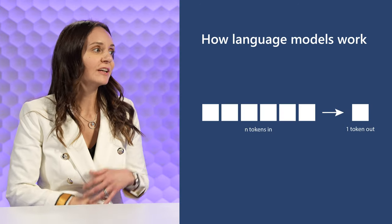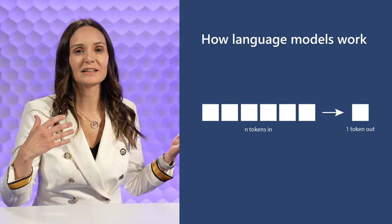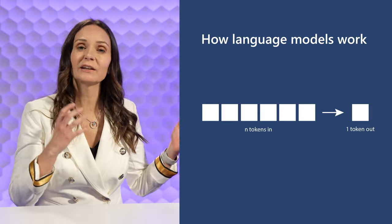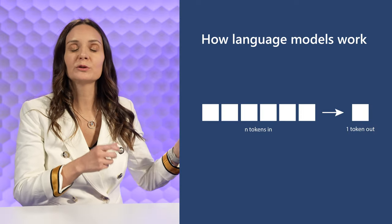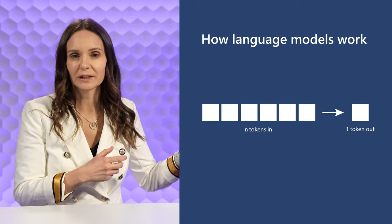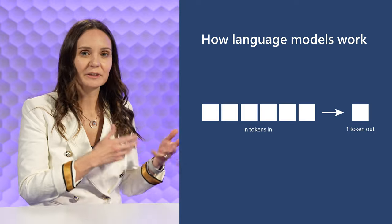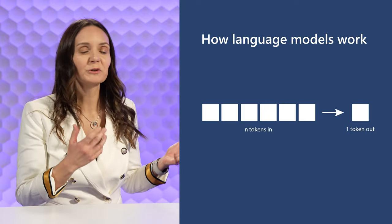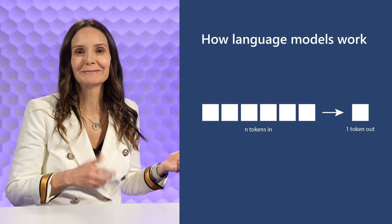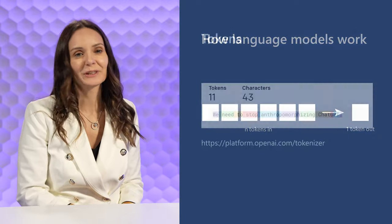At the very high level, the way generative models work is that they get N tokens in and they produce one token out. This is a very simple idea if you know what a token is, so let's find out what a token is.